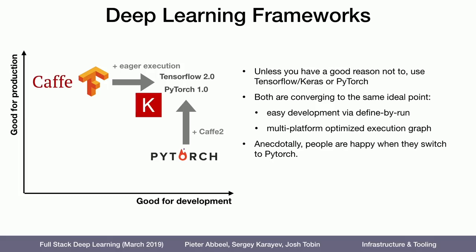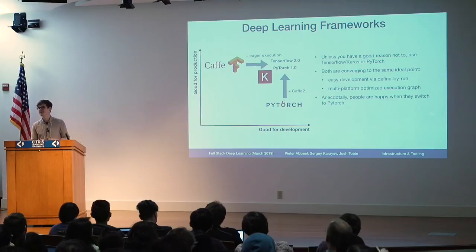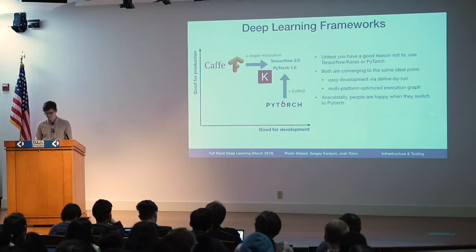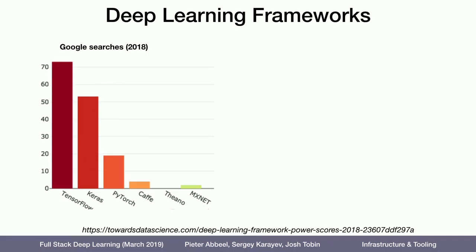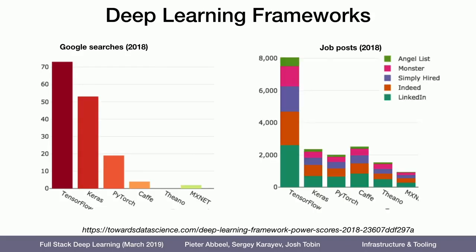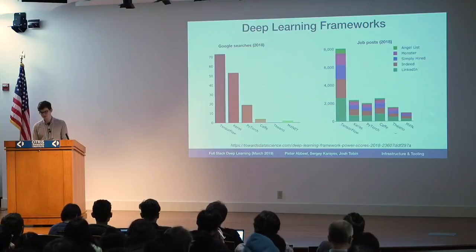Anecdotally, we've all met people who are happy they switched to PyTorch, and personally I haven't met people who switched away from PyTorch and were happy about it. Google searches show people are searching a lot for TensorFlow and Keras. In our interviews with about 20 to 25 deep learning practitioners, most people use TensorFlow and Keras but PyTorch is definitely growing. Looking at job posts, TensorFlow is definitely number one. CAFE is still up there because industries like oil, financial, and medical are using CAFE since it's so fast and people are comfortable with C++.